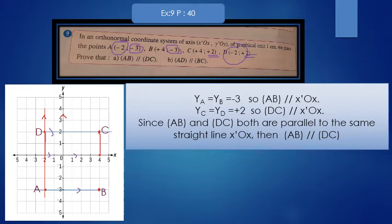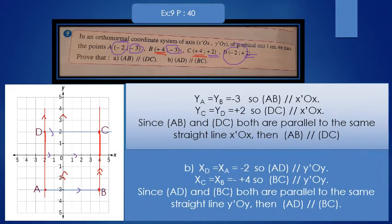Let's look at B and C. They have the same abscissa. So, they are parallel to y'y. Since AD is parallel to y'y and CB is parallel to y'y, then I can say that AD is parallel to BC.